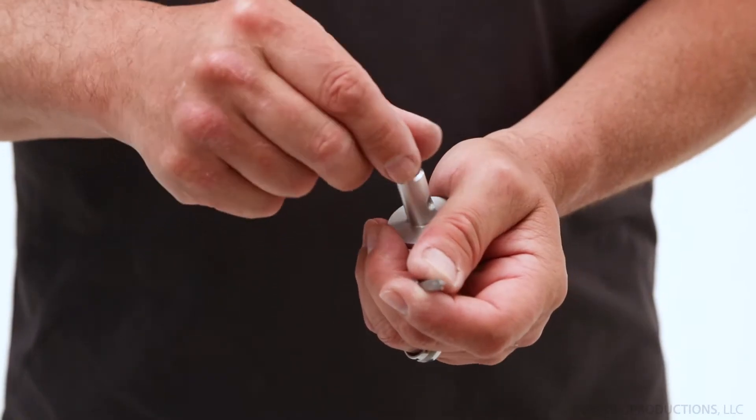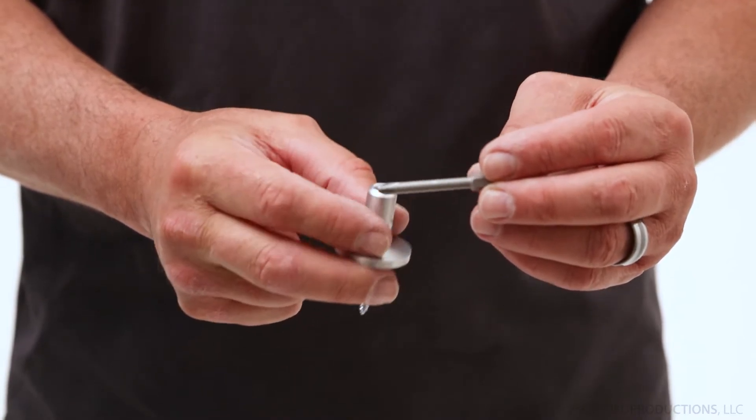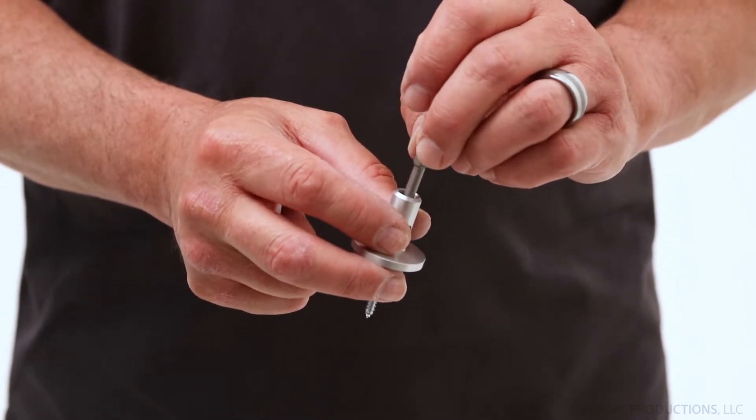To reach the screw properly in the mounting hole, you'll need a reduced shank No. 2 Phillips screwdriver. We have these available for purchase.